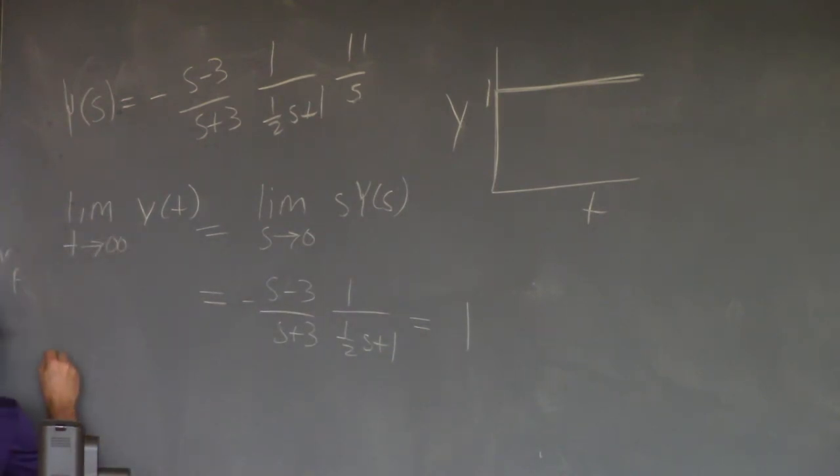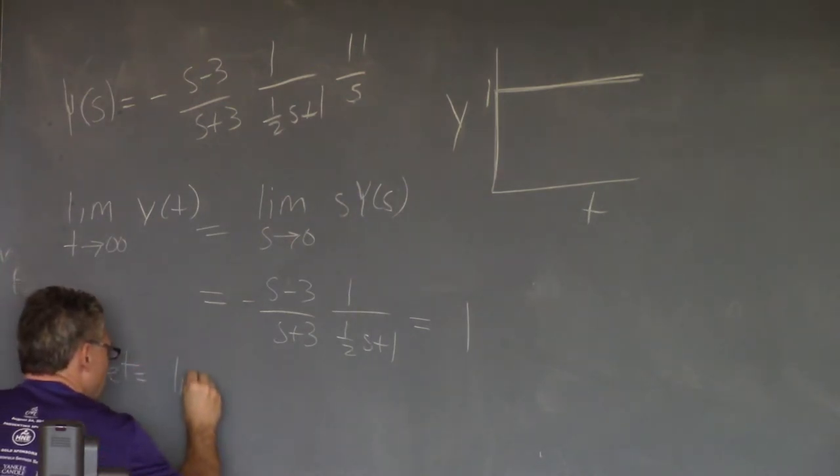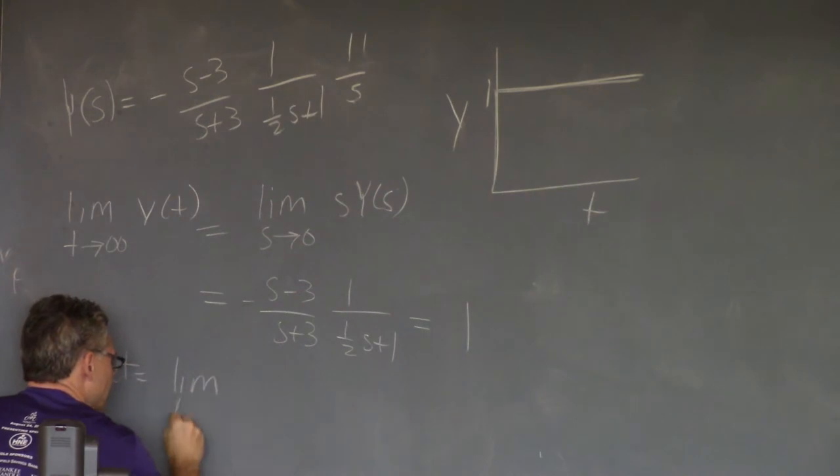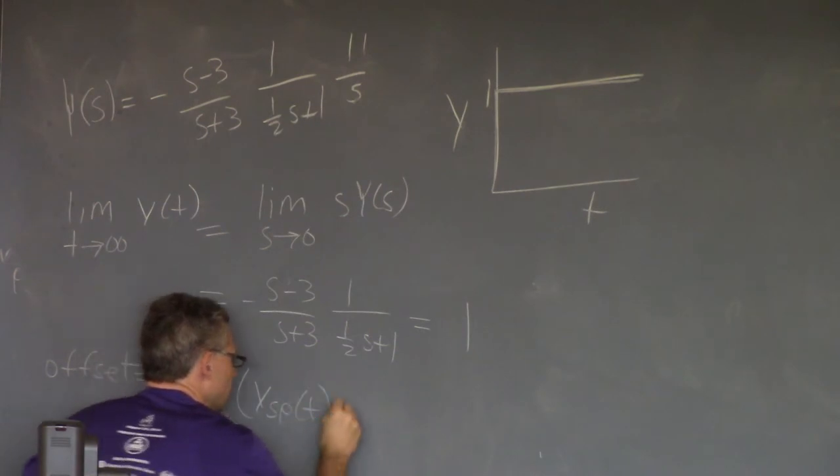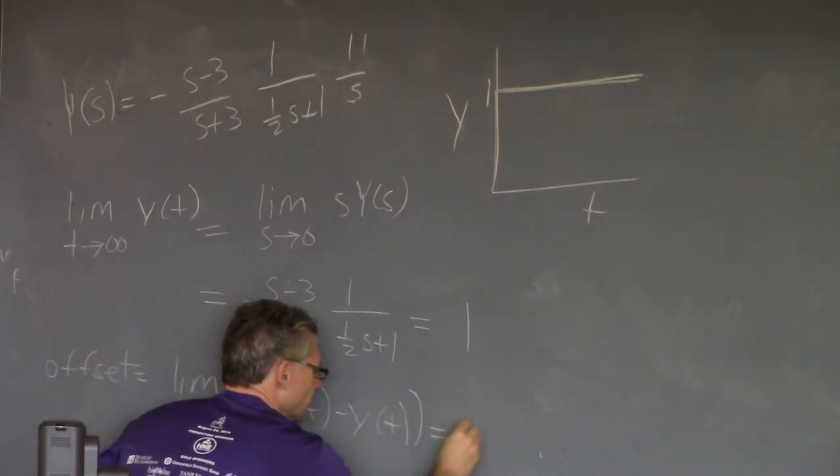And so you recall the definition of whether the system is offset as you take the limit as t goes to infinity, the difference between the set point, which goes to 1 in this case, and the output, which goes to 1 in this case, so it's 0.